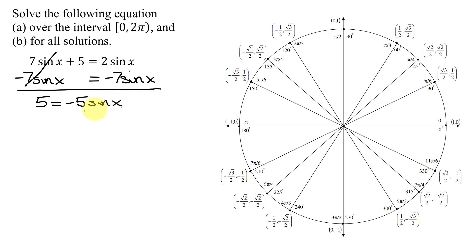Now to get sine x by itself, I'm going to divide both sides of this equation by negative 5. That's going to give me 5 divided by negative 5 is negative 1 equals, these negative 5's reduce, the only thing left on the right-hand side is the sine of x.